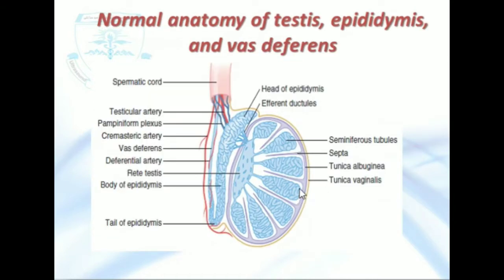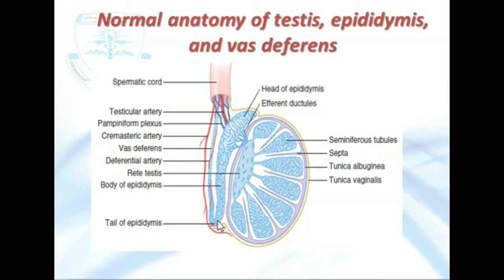This shows the testes. Here we can see the tunica vaginalis and tunica albuginea. The seminiferous tubules are separated from each other by the septae. These are connected to the rete testis, which are lying in the mediastinum. The mediastinum is connected through efferent ductules to the epididymis. The epididymis has a head lying on the upper pole of the testes, as well as a body and tail. The tail finally goes toward the spermatic cord, forming the vas deferens.